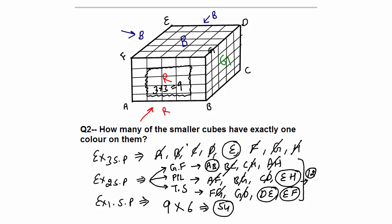So 54 cubes have exactly one surface painted and one color — it could be red, blue, or green. Adding these up: 54 cubes with one surface painted, plus 12 cubes with two surfaces painted in one color, plus 1 corner cube (E) with three surfaces painted in one color, gives 54 + 12 + 1 = 67 cubes total with exactly one color. That was a difficult question, but solving difficult questions helps you easily solve easier ones. In the next lesson I will continue with more cube questions.